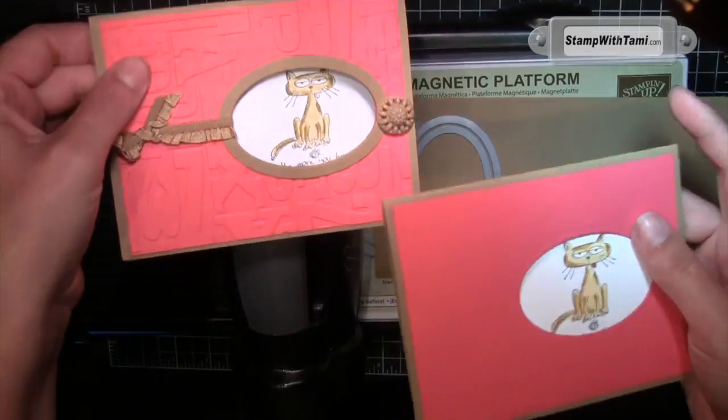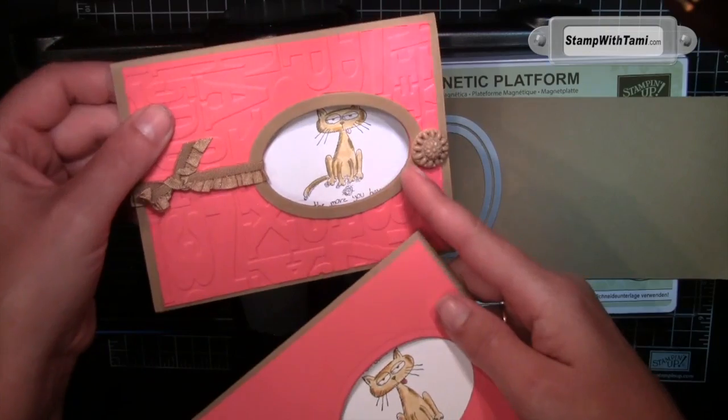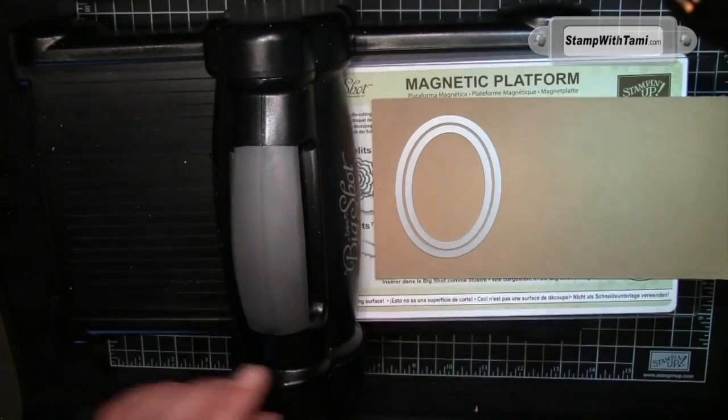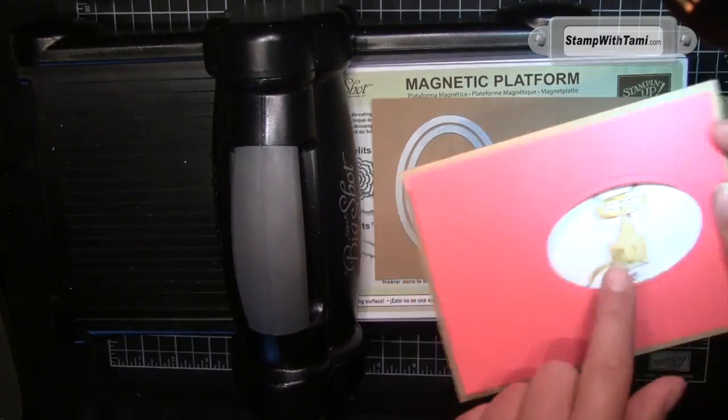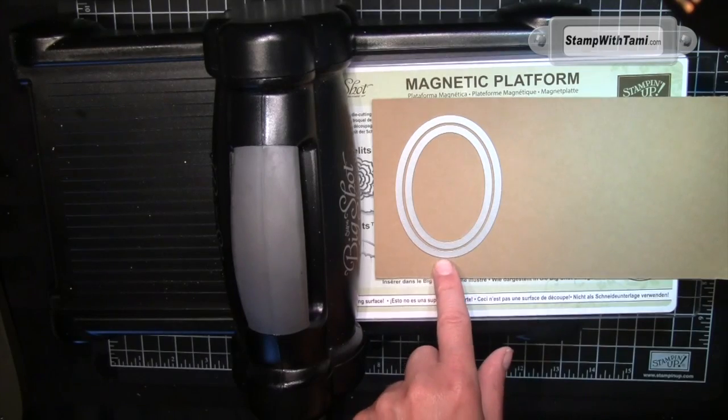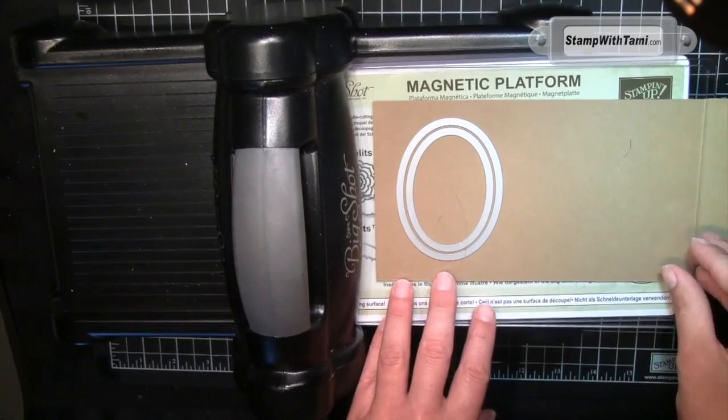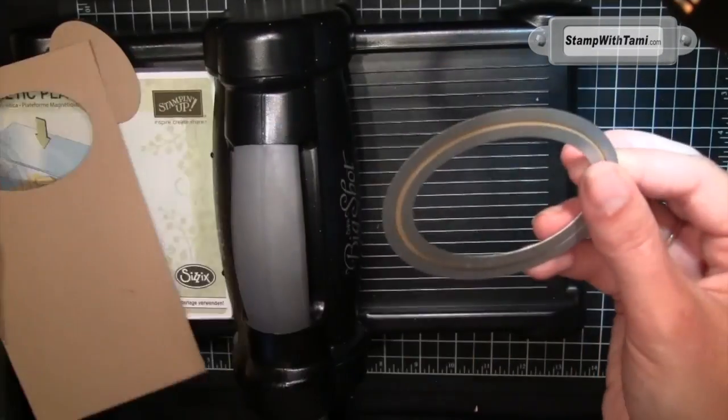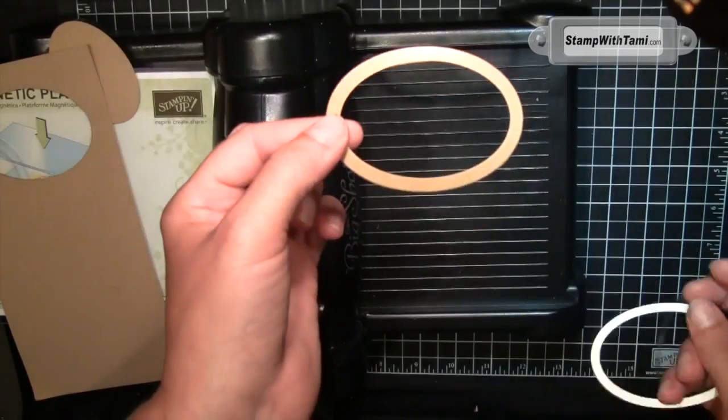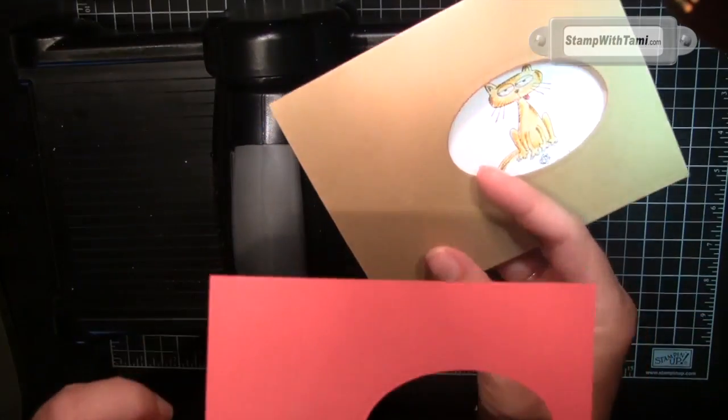Next I'm going to show you how to make this cool little frame border over that window. Using the same oval that we cut the window—second to largest, third to largest—line one up exactly in the center of the other and run it through the Big Shot in between two cutting pads. Once we pull those apart, there's our frame. Remember we only attached that with a tiny little bit of snail. I'm taking it apart now.